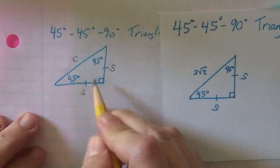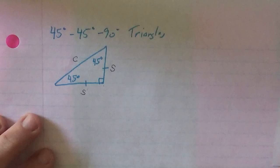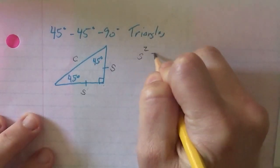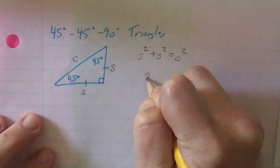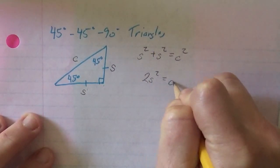And I know it's a right triangle, so it follows the Pythagorean Theorem. So I know that S squared plus S squared should be C squared, so 2S squared equals C squared.